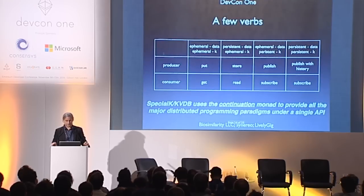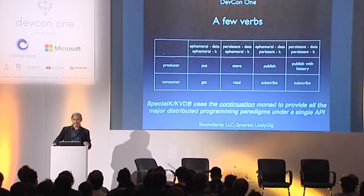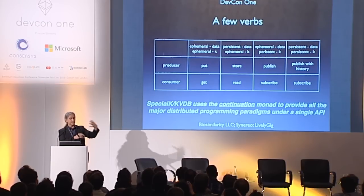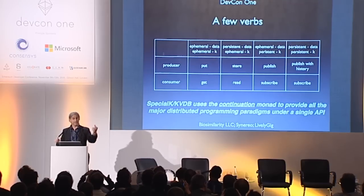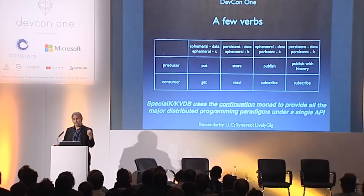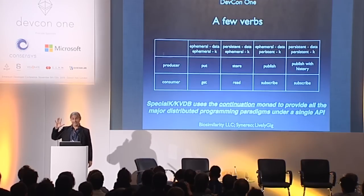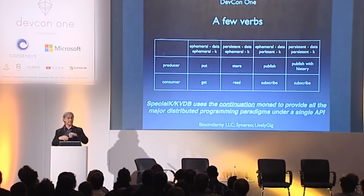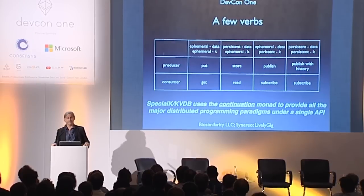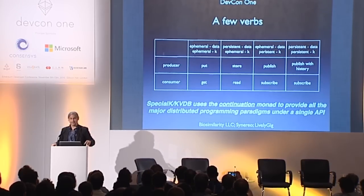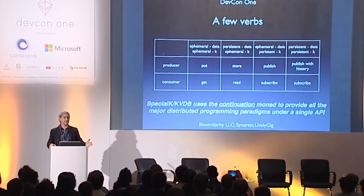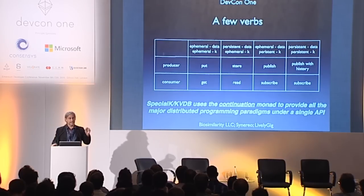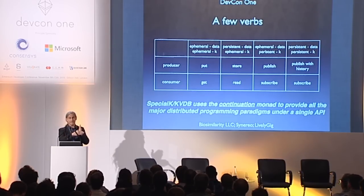We can do better than that. Special K's KVDB looks at a duality between continuation — the rest of your program — and data. Say your program walks up to the blockchain looking for something, and that something isn't there yet. In Special K, the rest of that program is packaged up as a piece of data and stored at the place where it was looking. That's the continuation. Data is dual to that, and this duality goes all the way back to the law of excluded middle — A or not A.